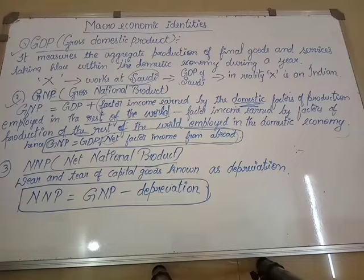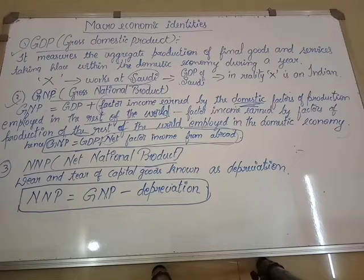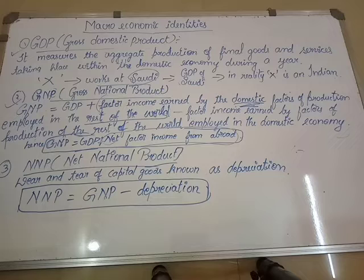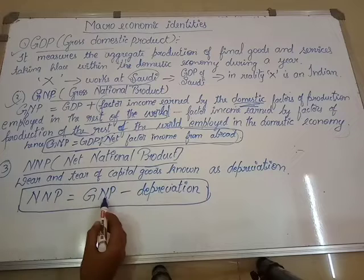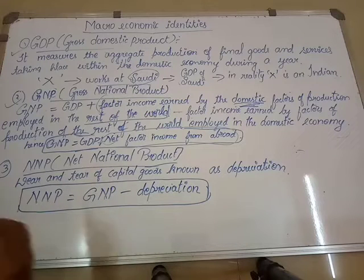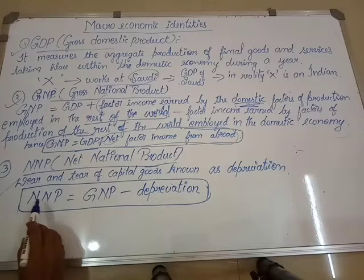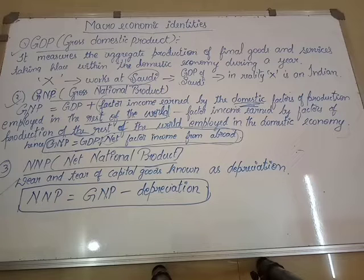So that much we have understood. The second concept GNP is done. Now the third concept is Net National Product. Even after calculating GNP, it still does not give the exact value, because capital goods have depreciation — the wear and tear of assets. As we continuously use assets their value reduces, so depreciation must be deducted from GNP. Therefore, Net National Product equals GNP minus depreciation. So these three terms — GDP, GNP, and NNP — are clear.